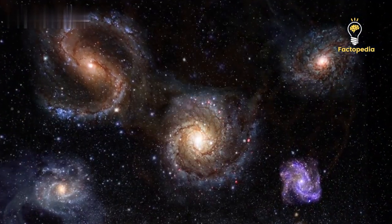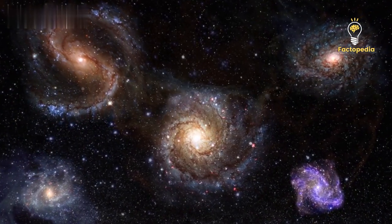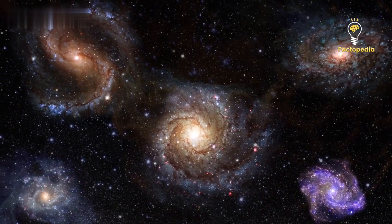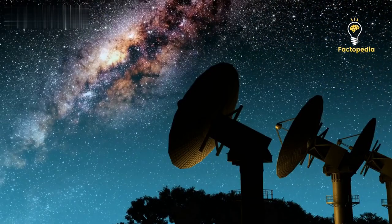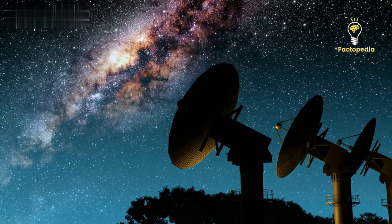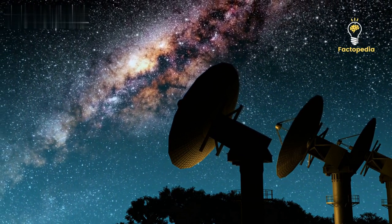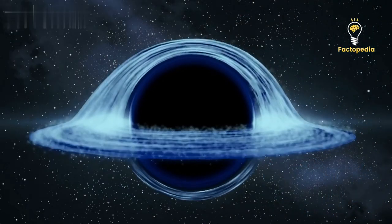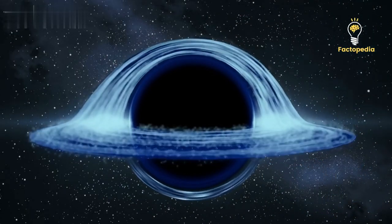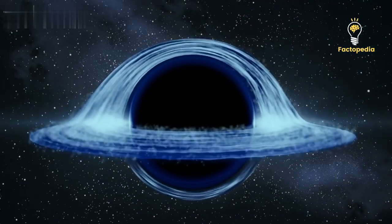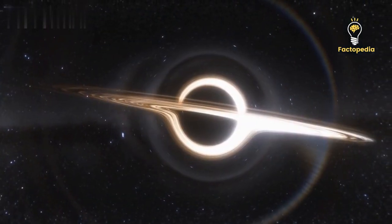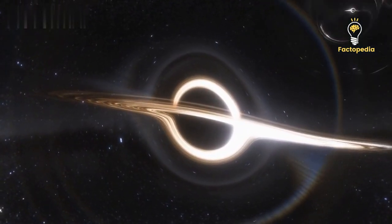In the past, astronomers believed that galaxies were isolated entities, not interacting with one another. But as telescopes became more powerful, they started observing galaxies not only interacting but also merging with each other. And that got them wondering about the fate of the black holes within these merging galaxies. What happens when these black holes come together? Do they merge as well?